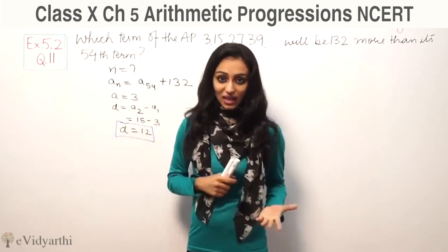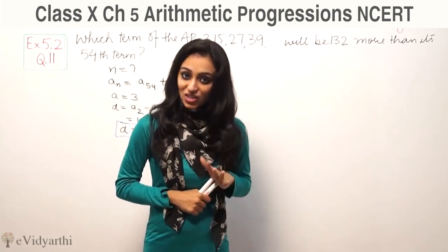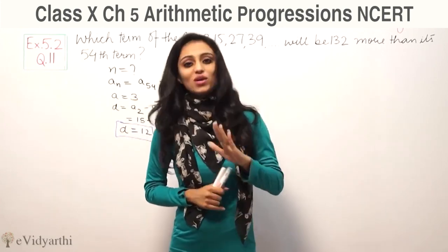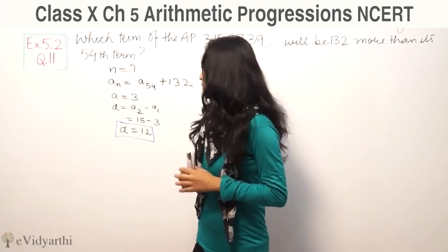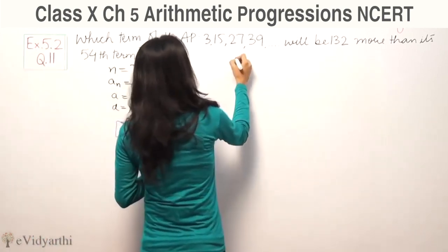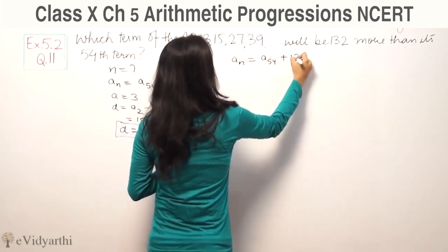Now, let's set up the equation. An is given as An equals a54 plus 132. We need to find which term this represents.